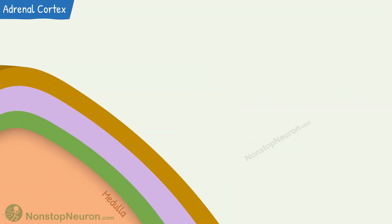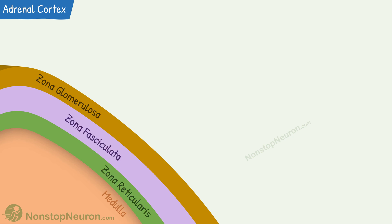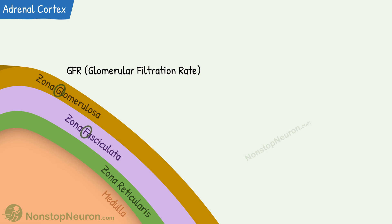The adrenal cortex is divided into three different zones. The outermost zone is known as zona glomerulosa. The middle zone is zona fasciculata. And the innermost zone is zona reticularis, which lies near the junction of the cortex with the medulla. I remember these layers with the mnemonic GFR, which stands for glomerular filtration rate — from outside to inside: G for glomerulosa, F for fasciculata, and R for reticularis.